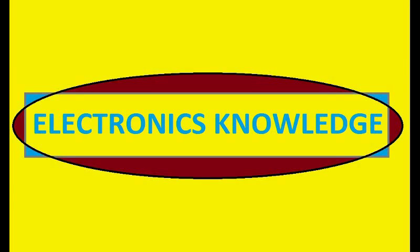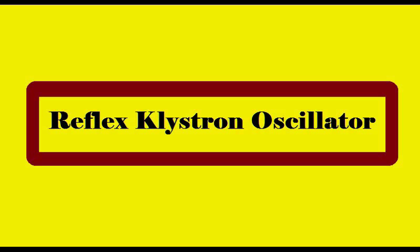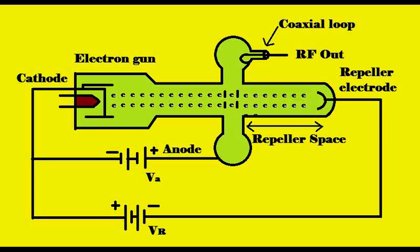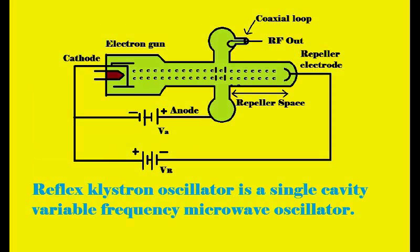Welcome to Electronics Knowledge. In this video we will see how microwave oscillations are generated in a reflex klystron oscillator. An oscillator is a device which converts DC input to AC output — currents or voltages. An amplifier can be converted into an oscillator by connecting feedback.